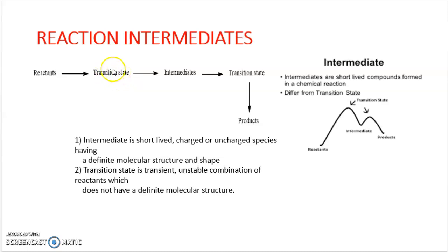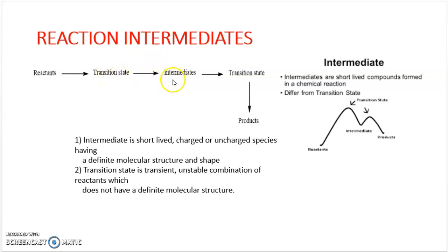If we consider the transition state, it is also unstable and has high energy. It is the unstable combination of reactants and does not have a definite molecular structure. Both intermediate and transition state are highly unstable and energetic, but the main difference is that while intermediates exist and we can isolate them, we cannot isolate the transition state.